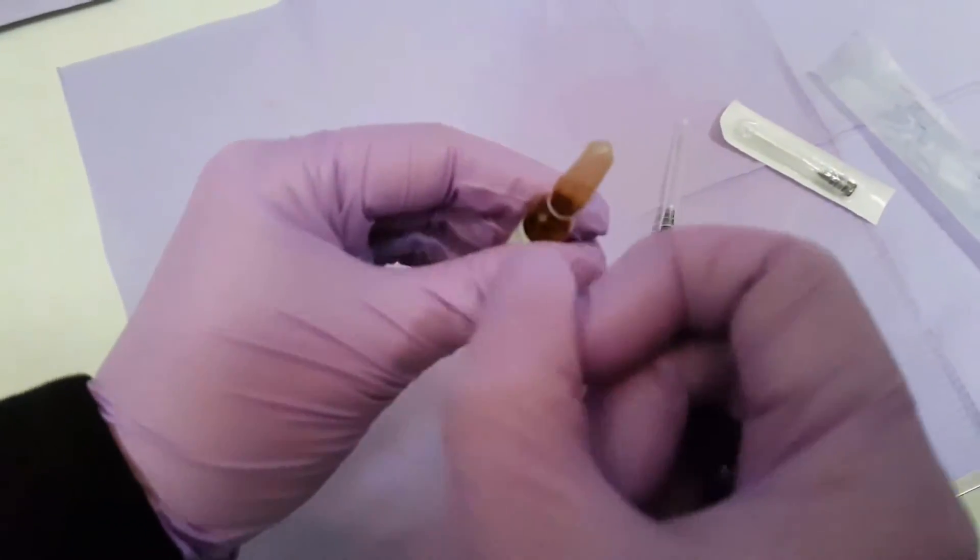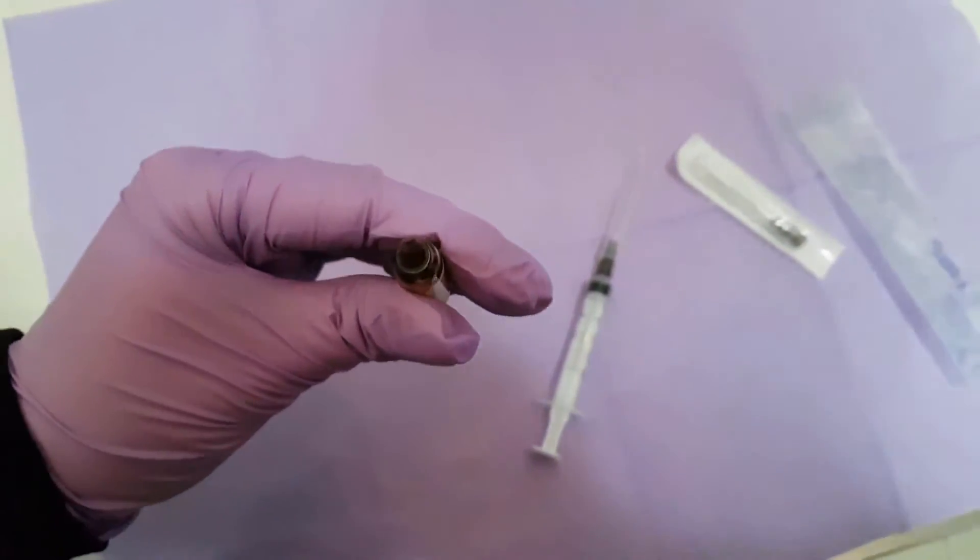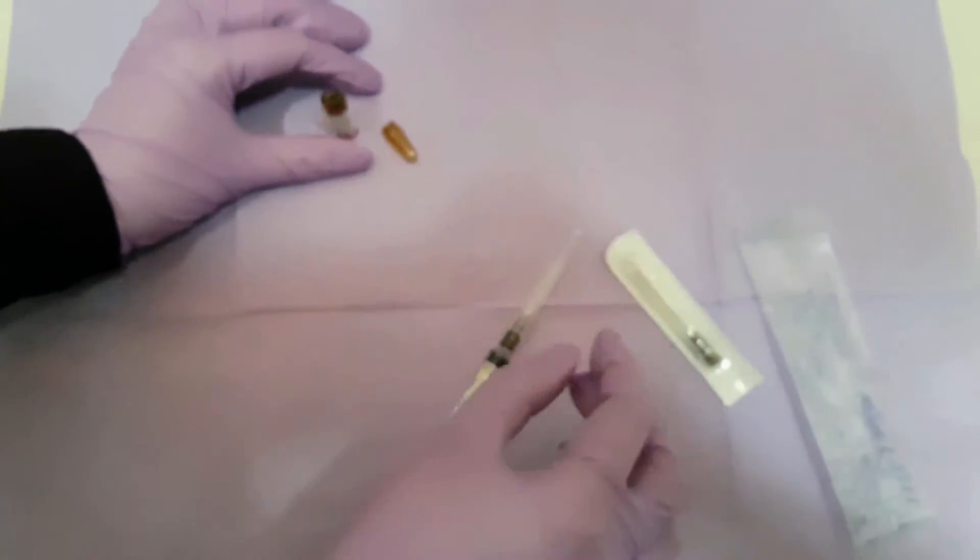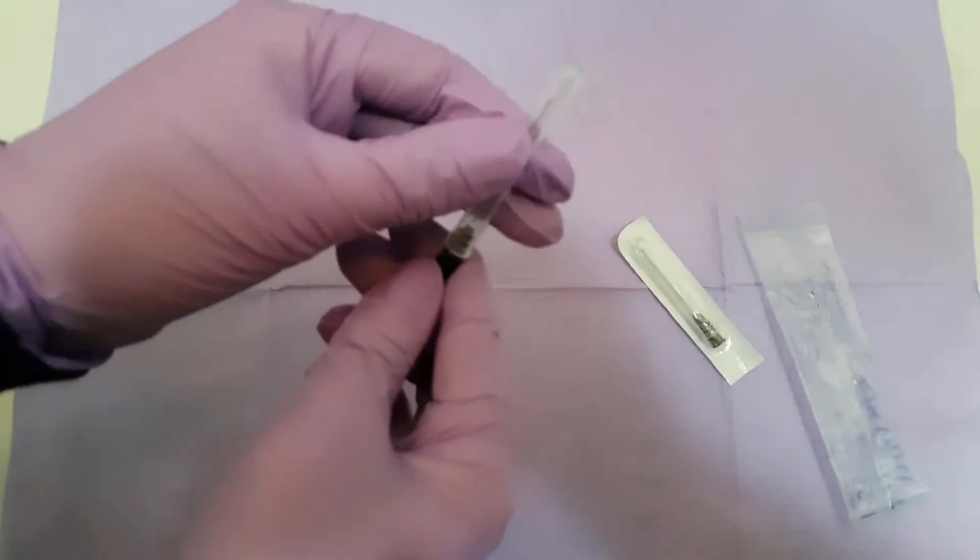Next we put down the syringe and the needle and we take the ampoule with our local anesthetic. We make sure that the liquid is in the bottle. This is how we break the ampoule.